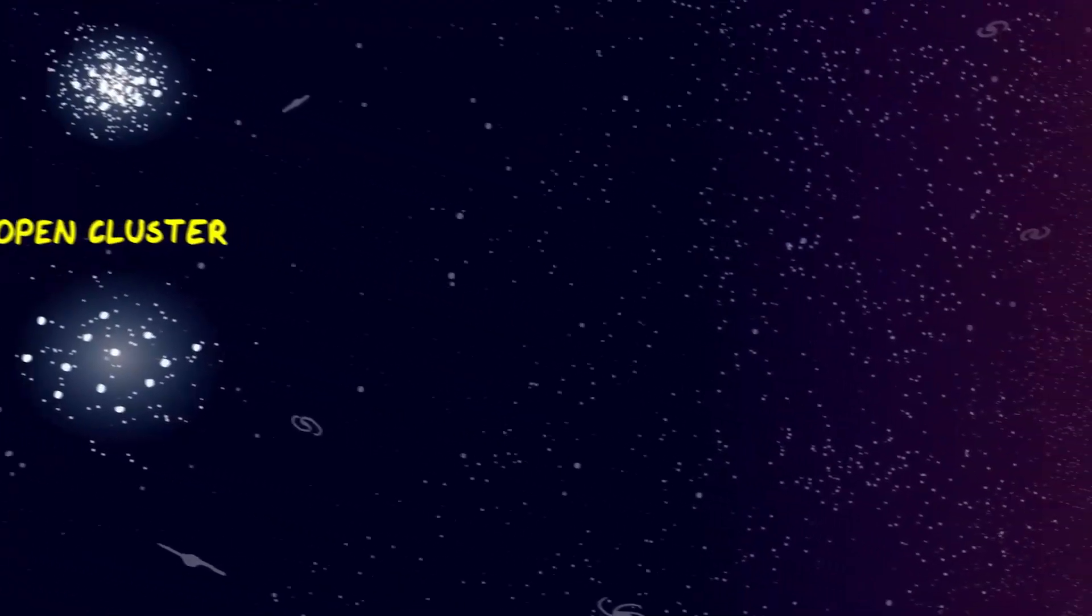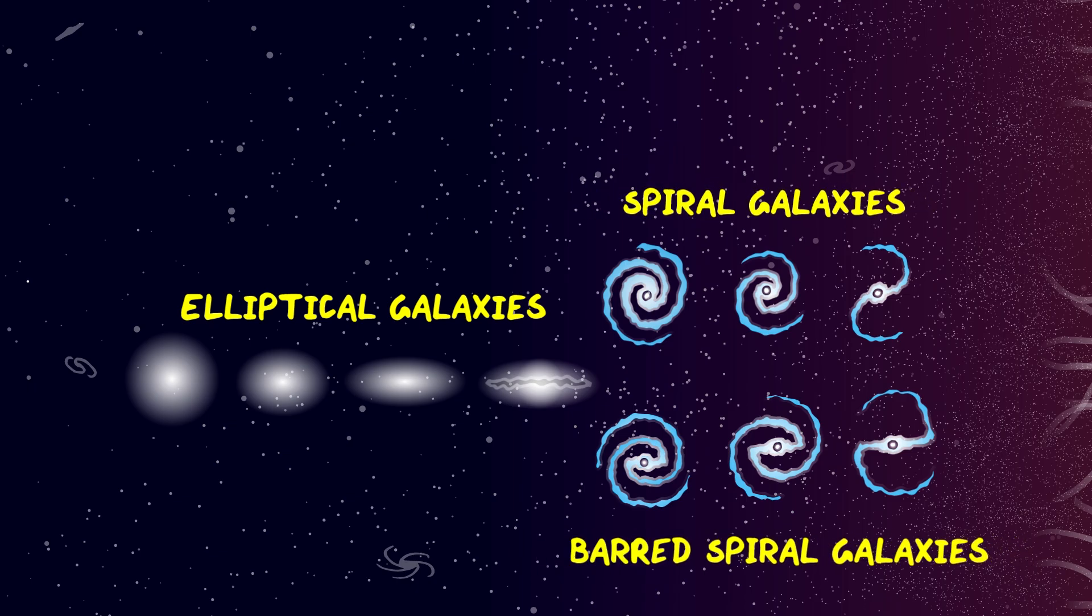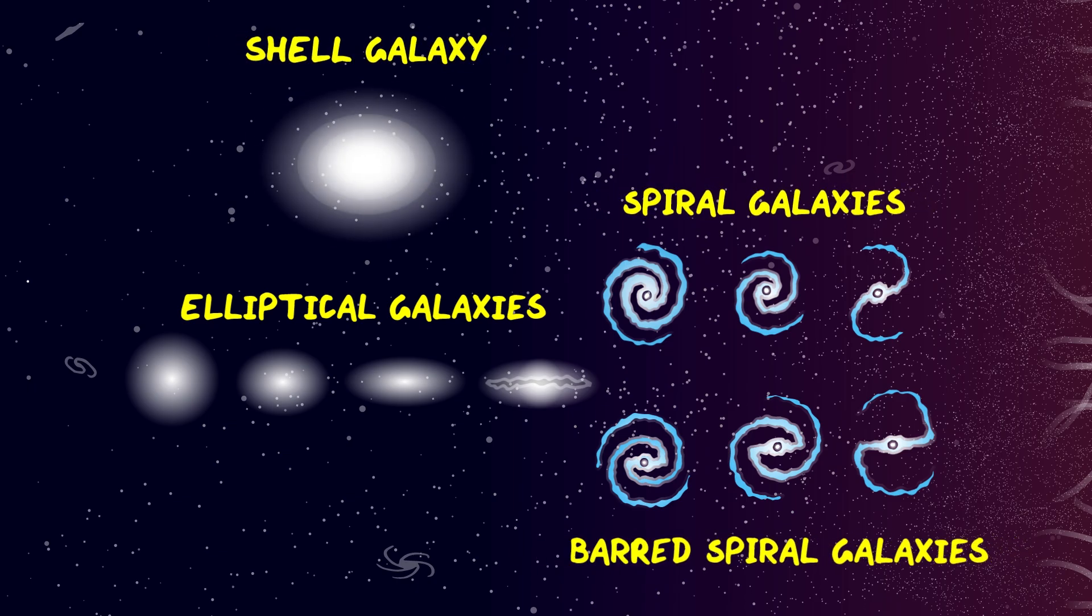The Milky Way galaxy is a spiral galaxy, but other galaxies broadly break down into elliptical, spiral and barred spiral galaxies. Shell galaxies are elliptical galaxies which are made from concentric shells of stars. Lenticular galaxies fall somewhere in between elliptical and spiral galaxies.